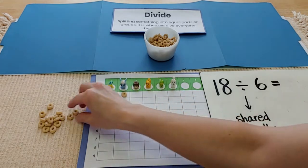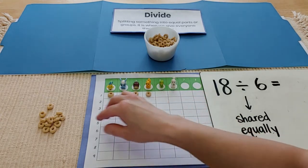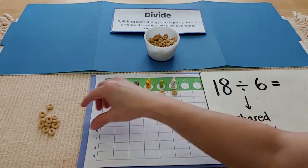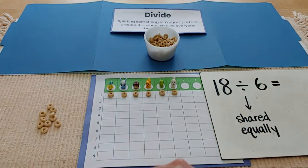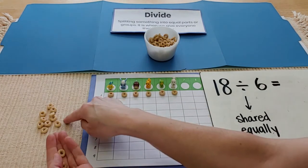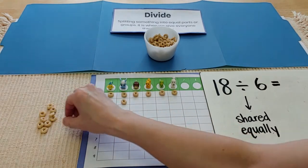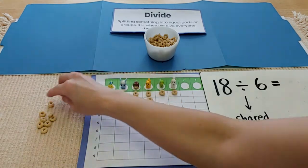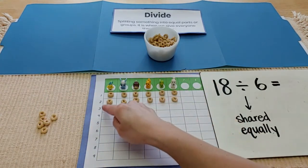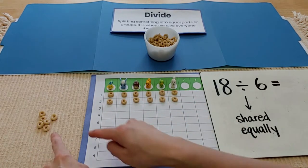One for you, one for you. Oh, yes, Hedgehog, you get to have one. Don't worry, Squirrel. You're going to get one, too. One for you, Poodle. I hope you like Cheerios. Now, you'll notice each one of my friends gets one so far, but I still have more Cheerios to share. So I got to keep sharing until all my Cheerios are gone.